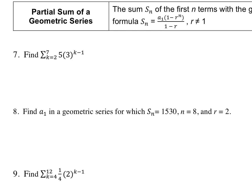On the back, we're doing some partial sums. The formula is right here. For number 7, first we figure out how many numbers are in this sum. Starting at 2 and going to 7 — that is 6 numbers. A common mistake is people think that's 5 numbers. You can count on your fingers: 2, 3, 4, 5, 6, 7 — that's 6 numbers.